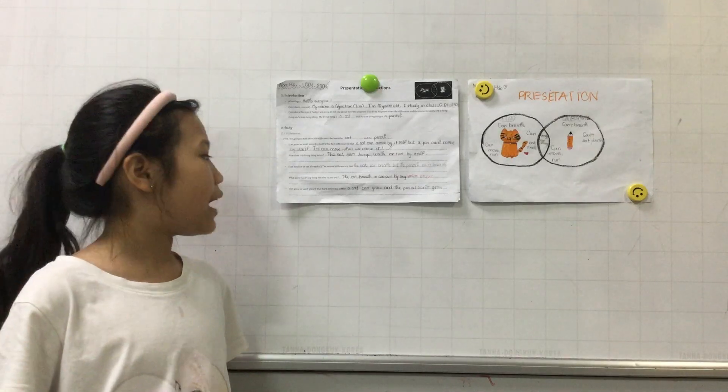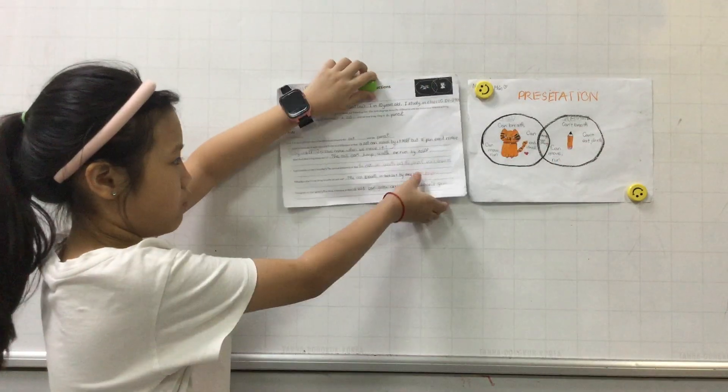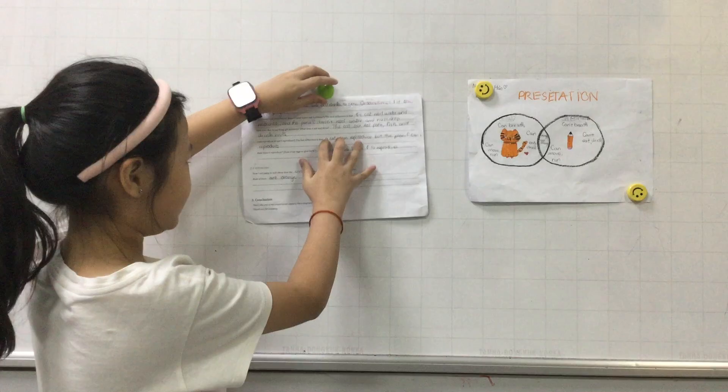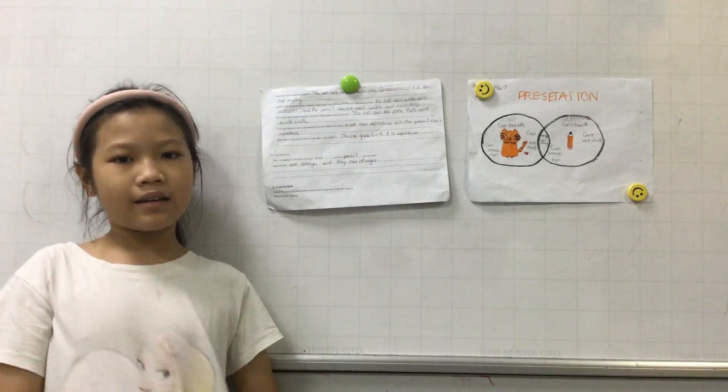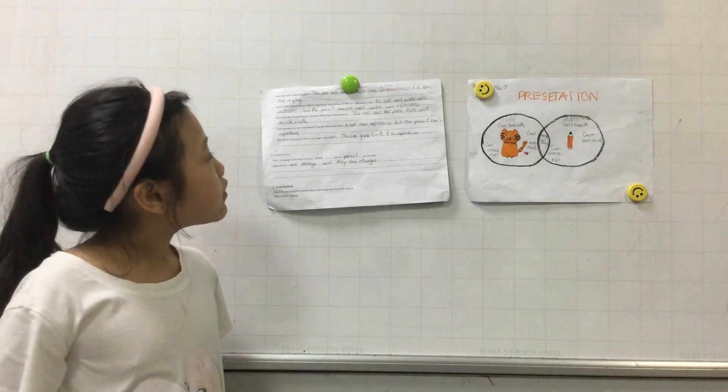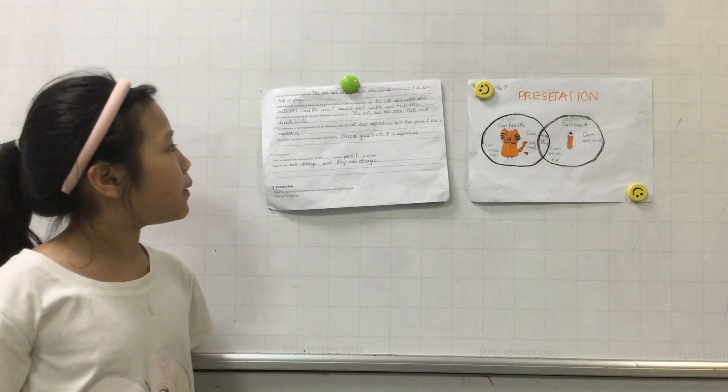The third difference is that the cat can grow, but the pencil can't grow. The cat eats food, drinks milk to grow, also eats, sleeps and plays.